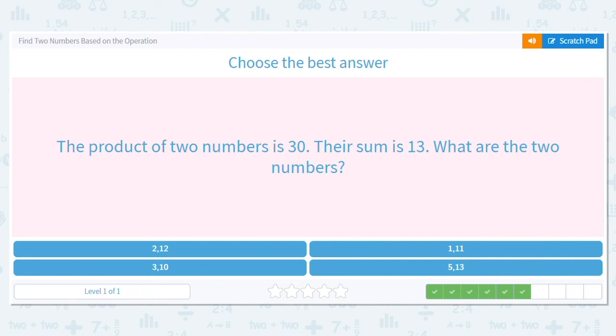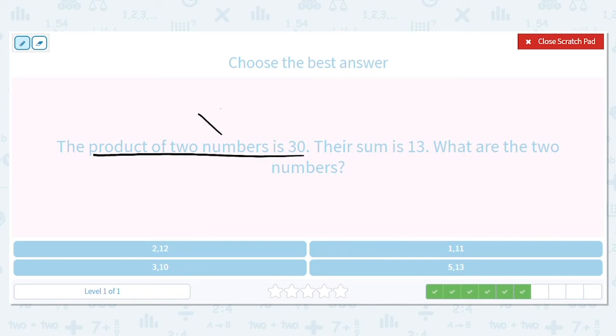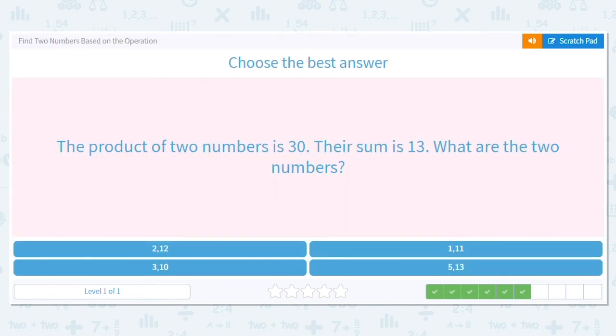Next one. The product of two numbers is 30, and their sum is 13. So when we multiply, it's 30, and when we add, the numbers are 13. So looking at the bottom, I'm going to eliminate some choices. I know that 2 times 12 does not equal 30, so I'm crossing that out. I also know that 1 times 11 does not equal 30. That equals 11, so it can't be that. So that means it's either 3 and 10 or 5 and 13. So if I do 3 plus 10, what do I get? I get 13. So 3 and 10 is my answer.